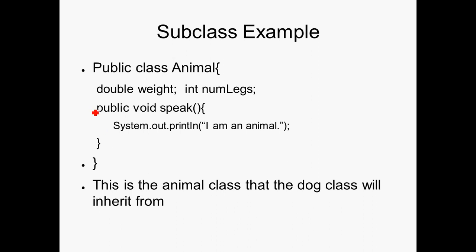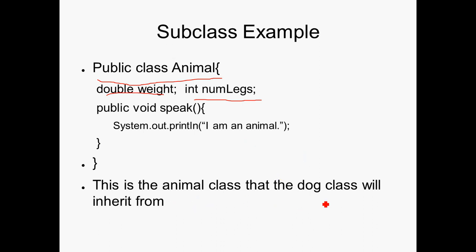Here's an example. We have our class animal, and it's going to have weight and numLegs as its instance variables. And then we're going to have a method called speak, and it's going to print 'I am an animal' to the console. This is the animal class that the dog will inherit from.